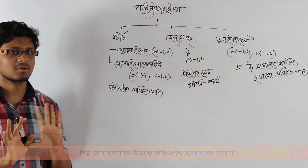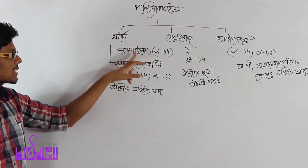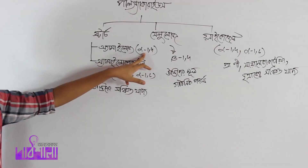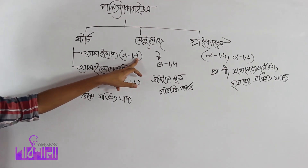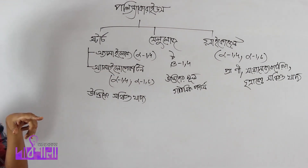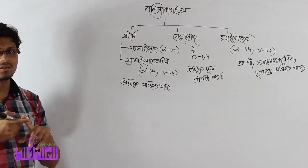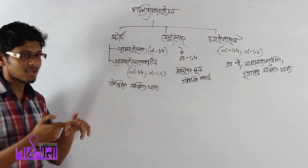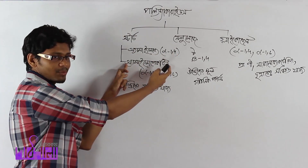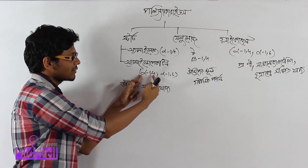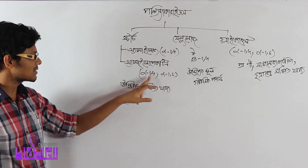In starch and glycogen, the monomer is glucose. Both amylose and amylopectin are made of glucose. The glycosidic bond in amylose is alpha-1,4, and this is the same as alpha-D-glucose.